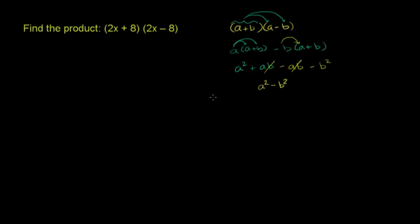So the pattern is a squared minus b squared. For a plus b times a minus b, where a is 2x and b is 8: 2x squared is 4x squared, and 8 squared is 64. The answer is 4x squared minus 64.